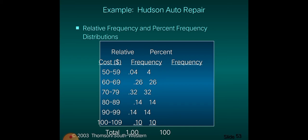For 50 to 59: 2 divided by 50 times 100 percent equals 4 percent for percent frequency. For relative frequency, 2 divided by 50 equals 0.04. The process is the same — the relative frequency answer multiplied by 100 percent gives the percent frequency. The numerator is the frequency for each class and the denominator is the total number of observations, which in our example is 50.